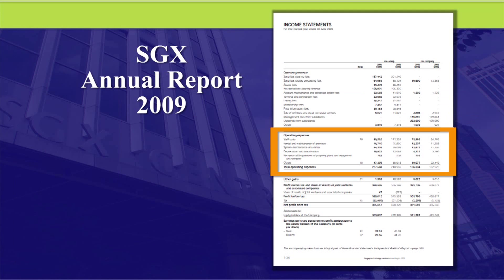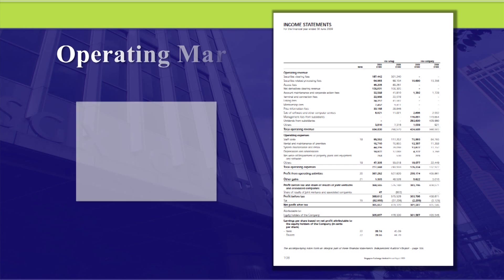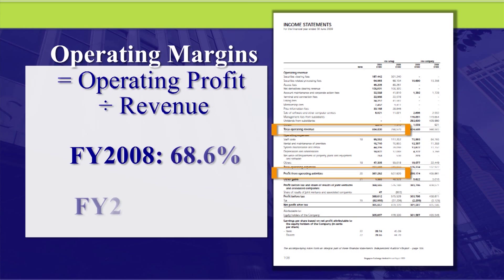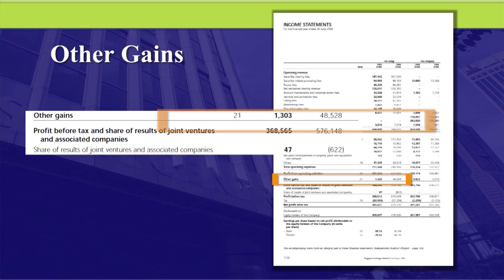Now let us go into the expenses to calculate the margins. To calculate operating margin, we take the profit from operating activities and divide by the revenue. We see that the operating margin fell from 68.6% in 2008 to a still credible 61.7% in FY 2009. Now let us look at other items. There is one item called other gains, and this fell from $48.5 million to just $1 million. To understand this better, let us look at item 21 in the financial statements. We will note that in 2008, the bulk of other gains came from the expiration of a compensation fund that is no longer needed by SGX. Therefore, in assessing the quality of the earnings, one should actually exclude this item.